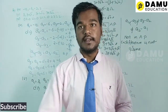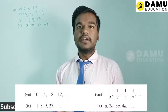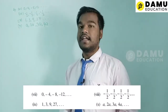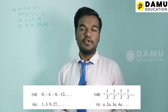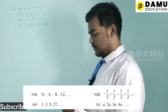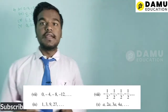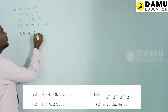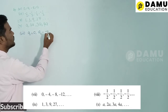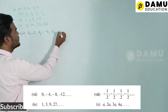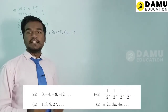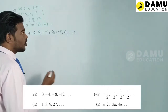Continuing with the seventh series: a1 = 0, a2 = −4, a3 = −8, a4 = −12.